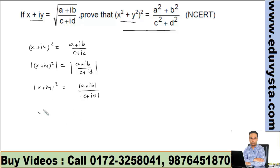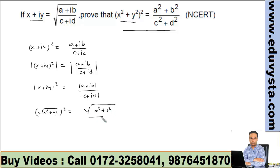Now the modulus of x + iy squared gives x² + y². On the right side, |a + ib| = √(a² + b²) and |c + id| = √(c² + d²).